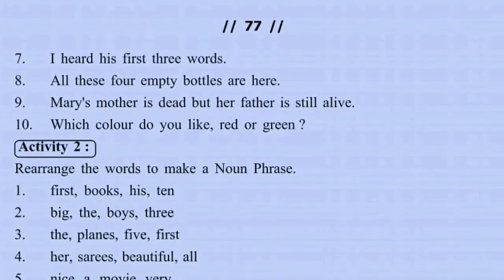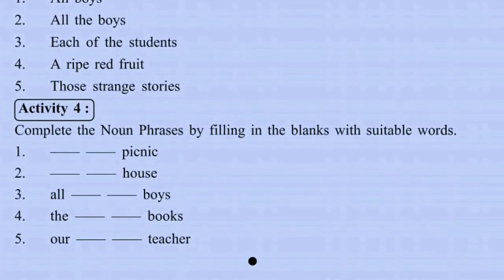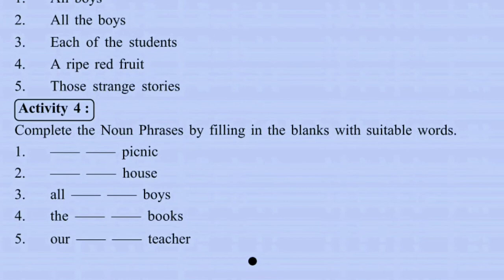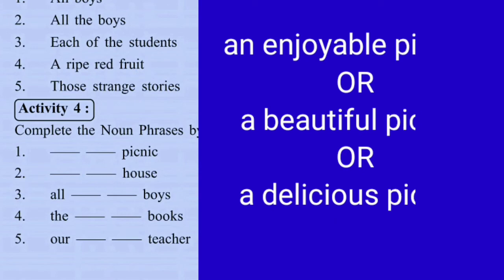Activity Four — the last one: Complete the noun phrases by filling in the blanks with suitable words. We have to put words of our choice to make a noun phrase. For example: an enjoyable picnic, a beautiful picnic, or a delicious picnic. We can add modifiers to make a noun phrase.